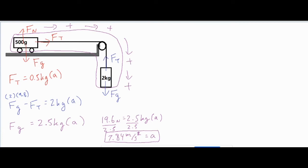So if I go ahead and plug in the 7.84 over here, then my force of tension is 0.5 times 7.84 meters per second squared, which is the acceleration I just solved for. And then my force of tension comes out to be 3.92 newtons. So I finished the first portion of the video, which is solving for the acceleration and the tension.